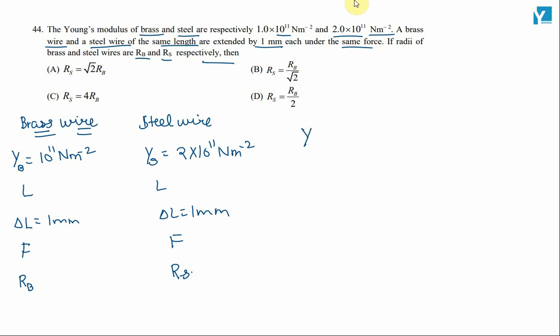We know Young's modulus is equal to force into length divided by A into delta L. So, this implies Y of brass wire divided by Y of steel wire is equal to force into length divided by area into delta L.